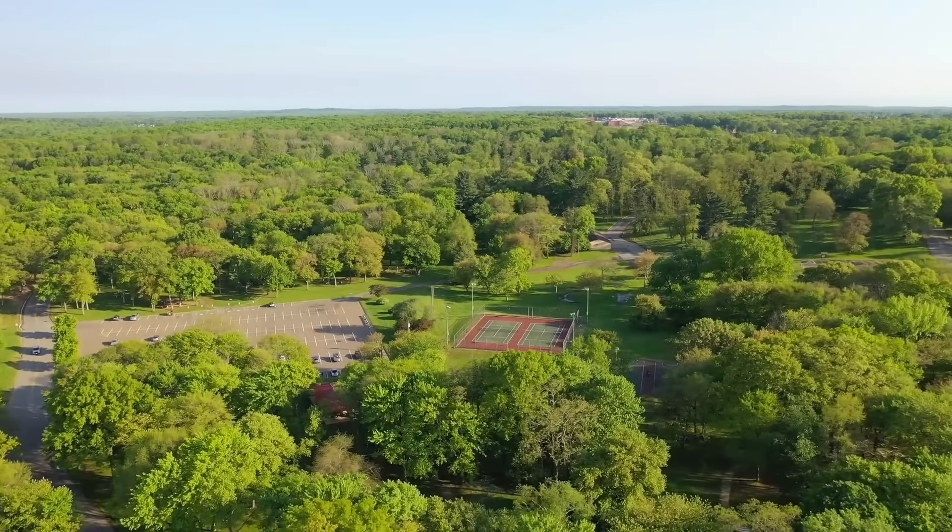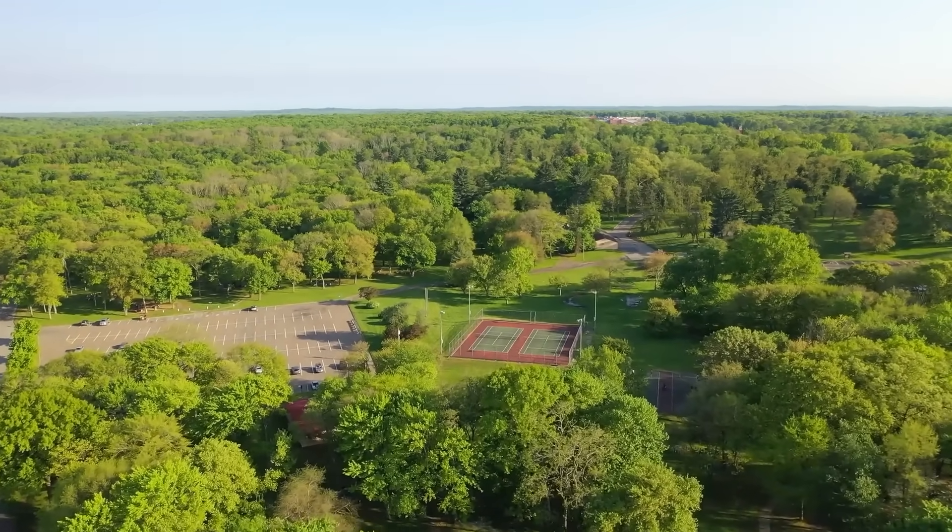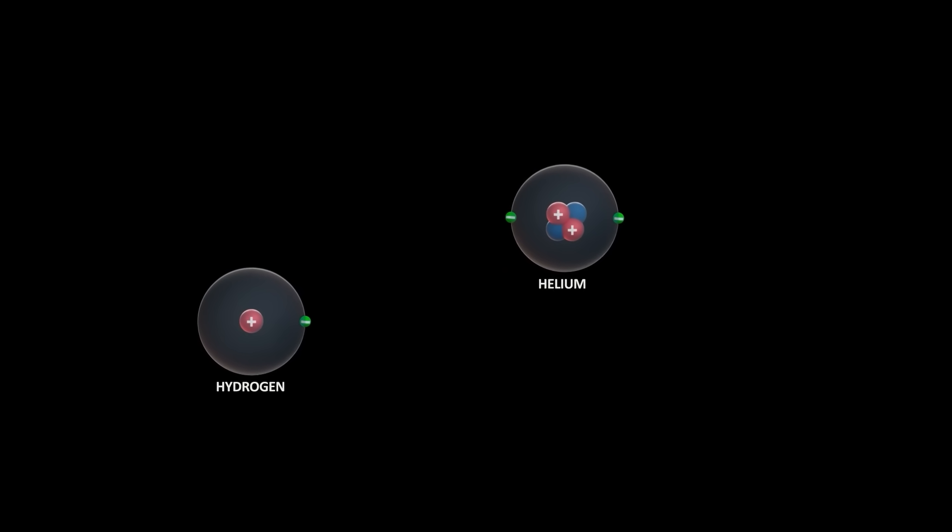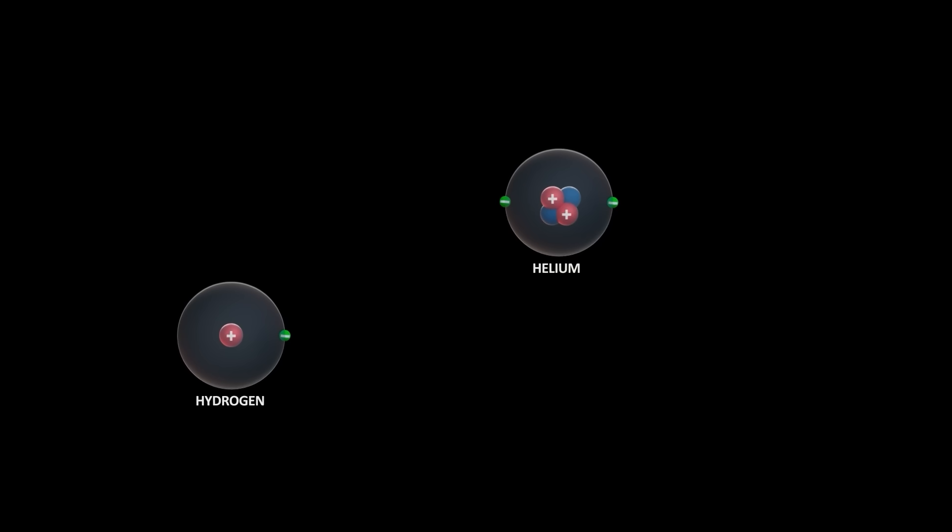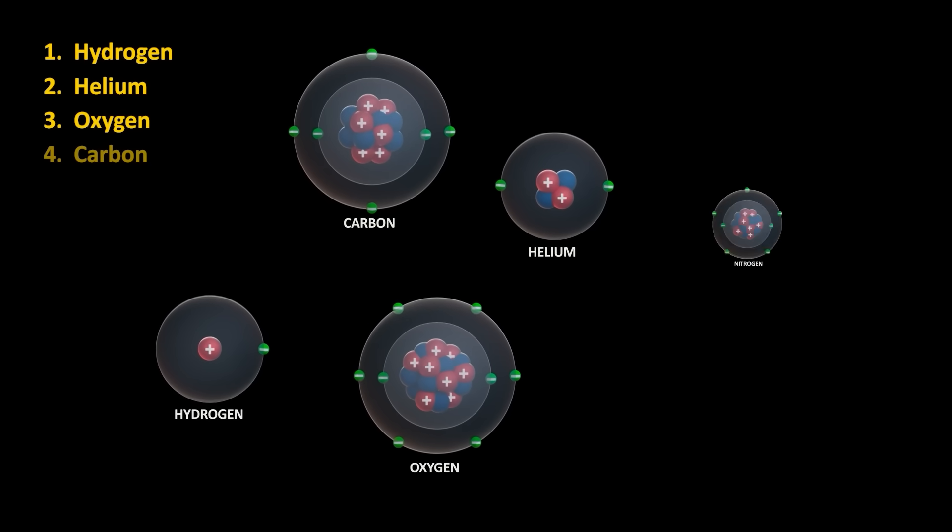This brings us to the second factor that made carbon attractive for life. Abundance. Not only is carbon versatile, it's also abundant. If we look at the top five most abundant elements in our solar system, we see the following in order: Hydrogen, helium, oxygen, carbon, and nitrogen.